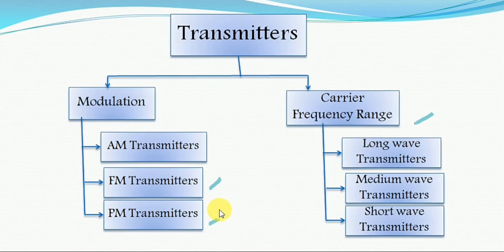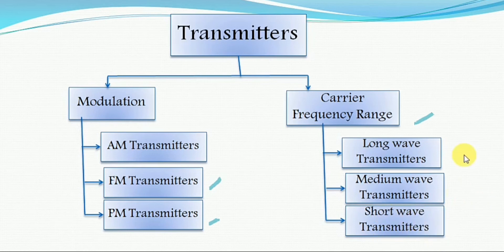Now let us see the classification of transmitters based on the carrier frequency range. It is divided into three main types: long wave transmitters, medium wave transmitters, and short wave transmitters. The frequency range of long wave transmitters is 30 Hz to 300 kilohertz, and their application is mainly in aeronautical and marine navigation.